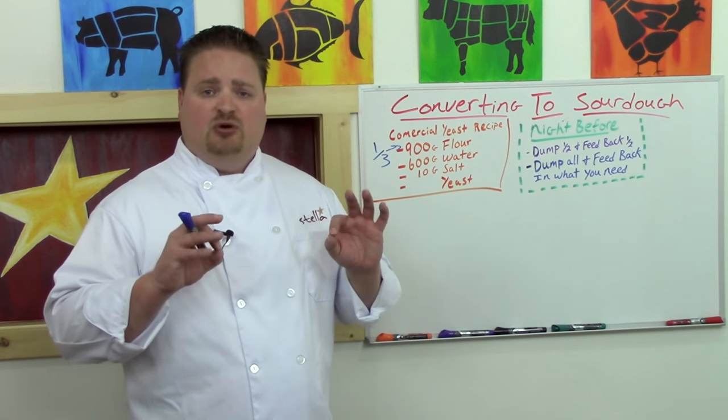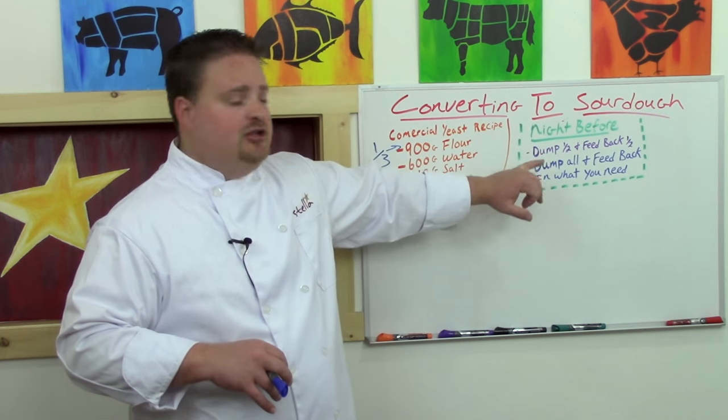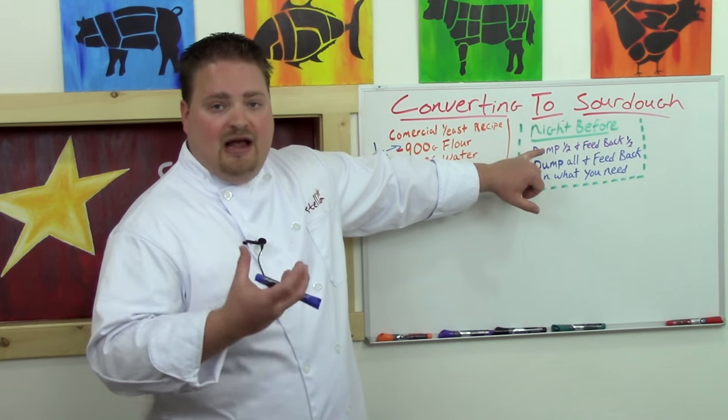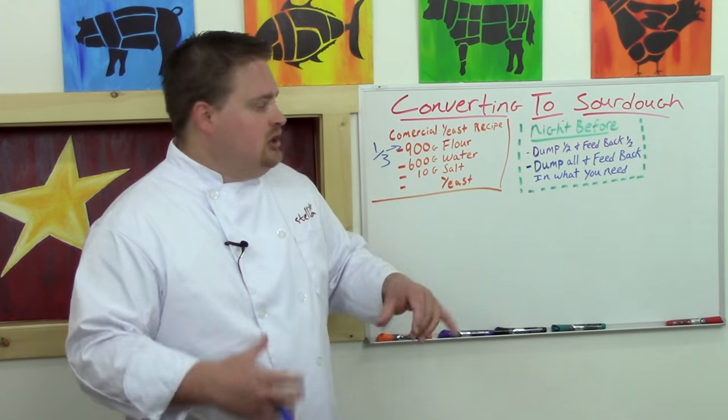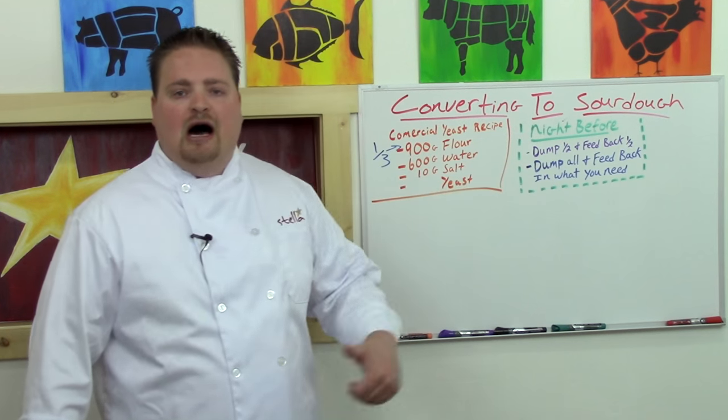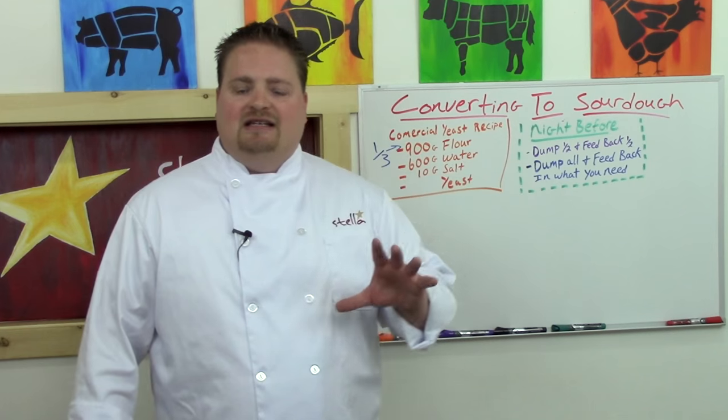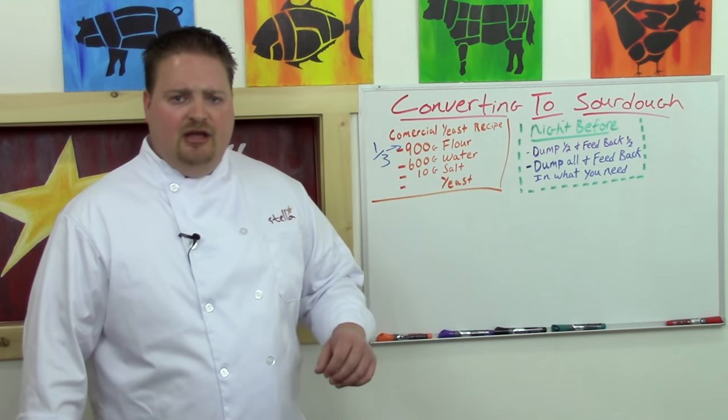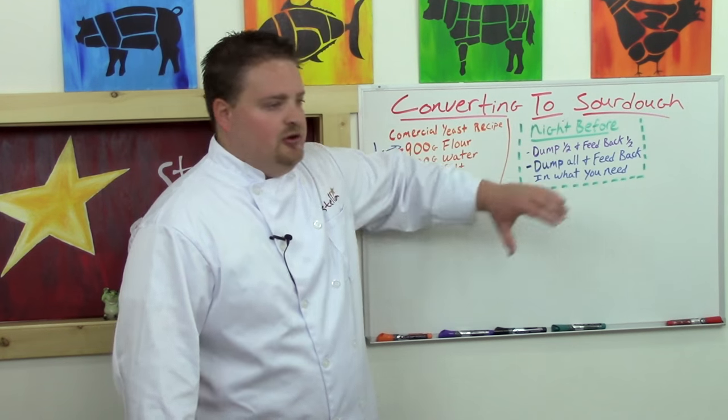The night before, if you dump out half and then feed half back into your pool of starter, you're going to have more acetic acid and lactic acid already in that starter, so it's going to give you a more sour loaf. You can also, after it ferments at room temperature for a couple hours, retard fermentation in your refrigerator, which is going to cancel out a lot of the lactic acid production and allow more acetic acid production in that starter, giving you a more sour loaf.